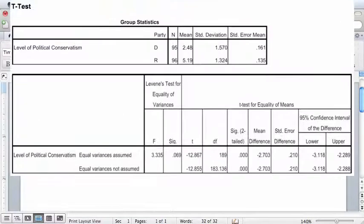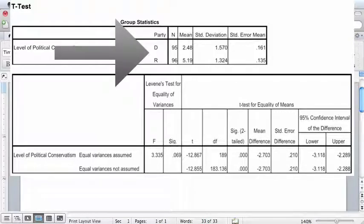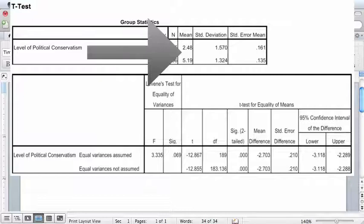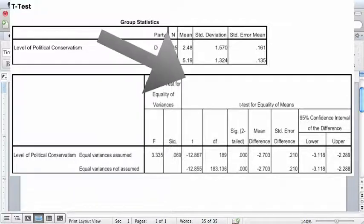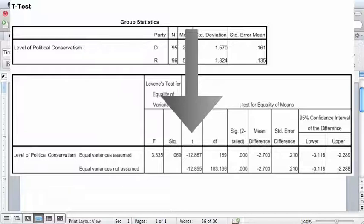Just like the chi-squared test, report the descriptive results in plain language first, adding the means and standard deviations in parentheses for emphasis. Then, add a statement about whether the difference was significant.